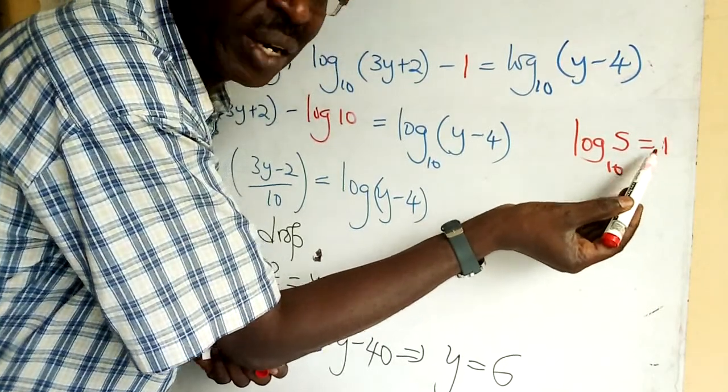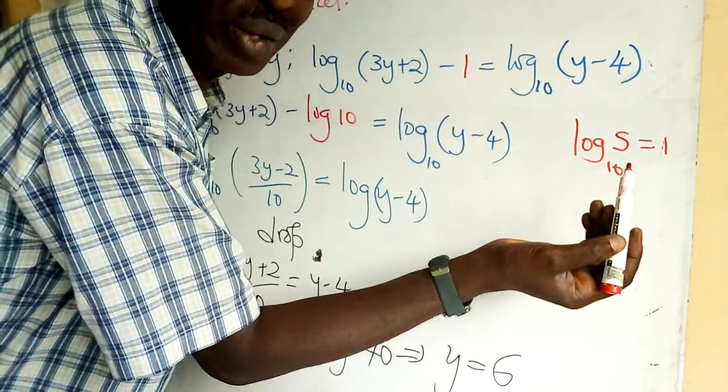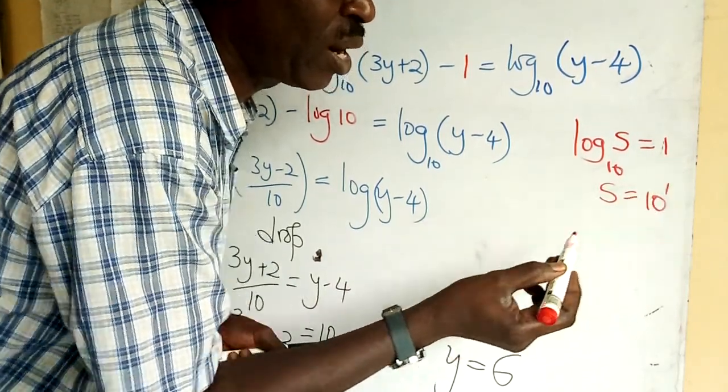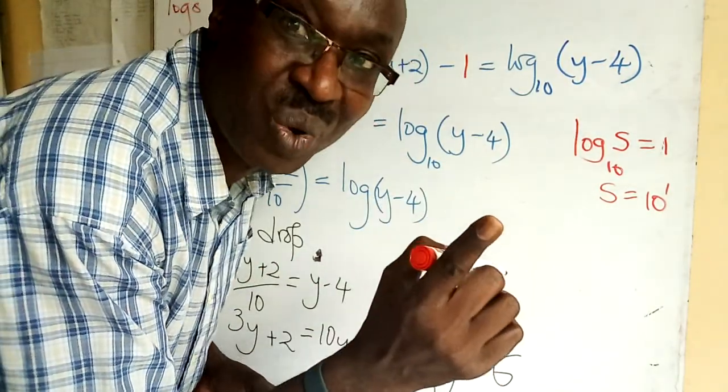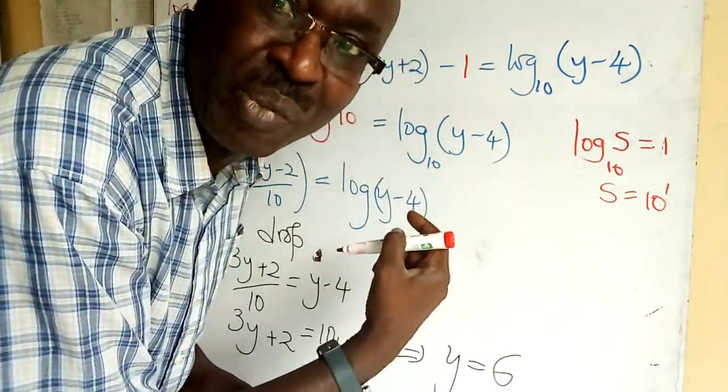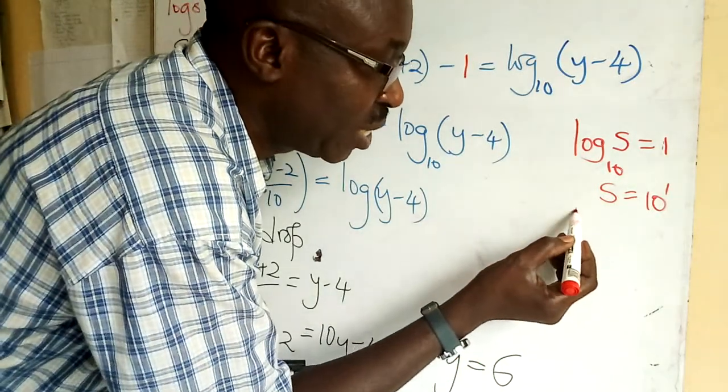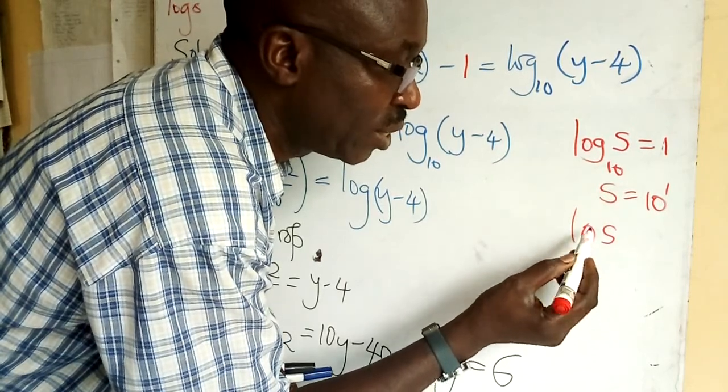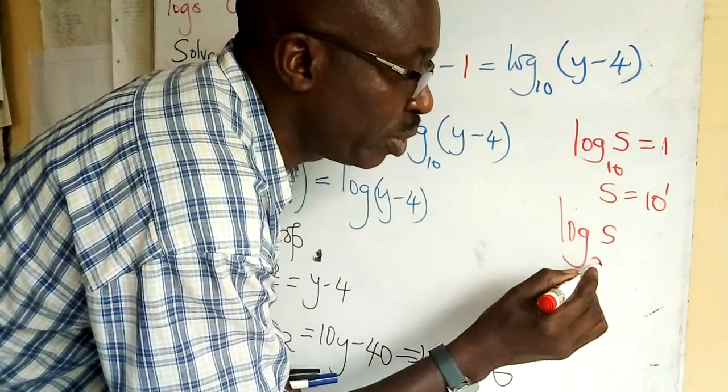Suppose it was base 2. I want to write log s to base 2, and there was maybe 3, a number 3. There was a term just 3, and the expression is in terms of log base 2.